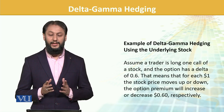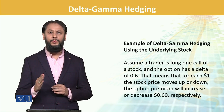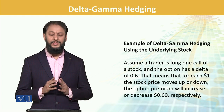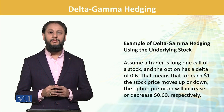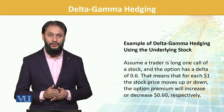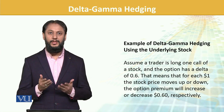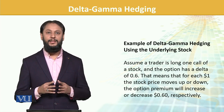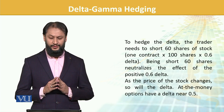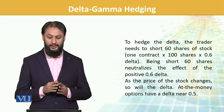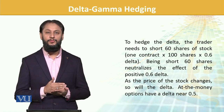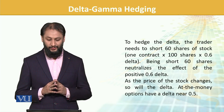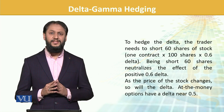Example of Delta-Gamma hedging using underlying stock. Assume a trader is long on a call option; the option has a delta of 0.6. This means that if there is a one-dollar change in the stock, the option will change by $0.60 — that is the delta's impact. To hedge the delta, the trader needs to short 60 shares of the stock (100 × 0.6 = 60 shares), which neutralizes the effect of the positive 0.6 delta.